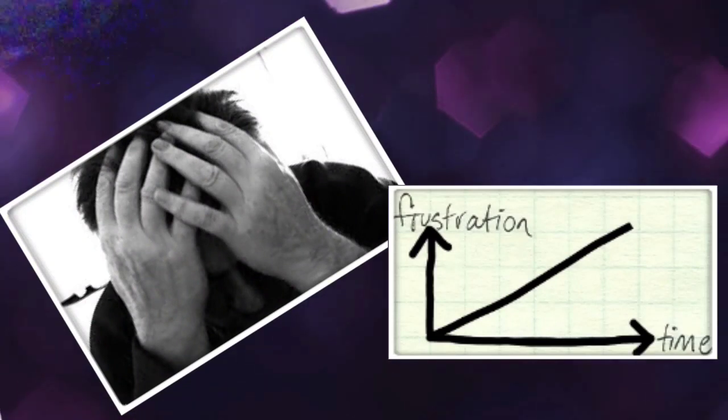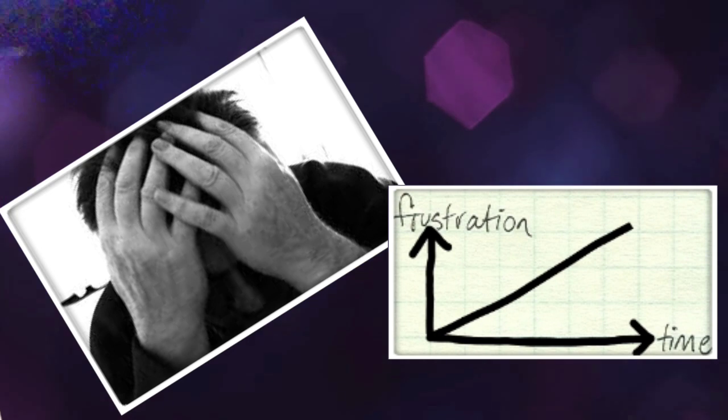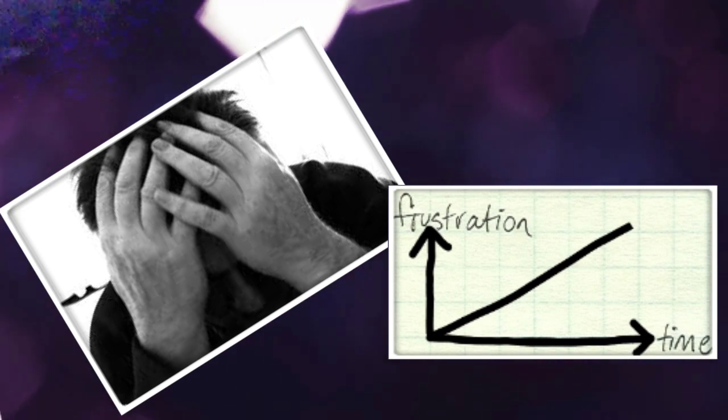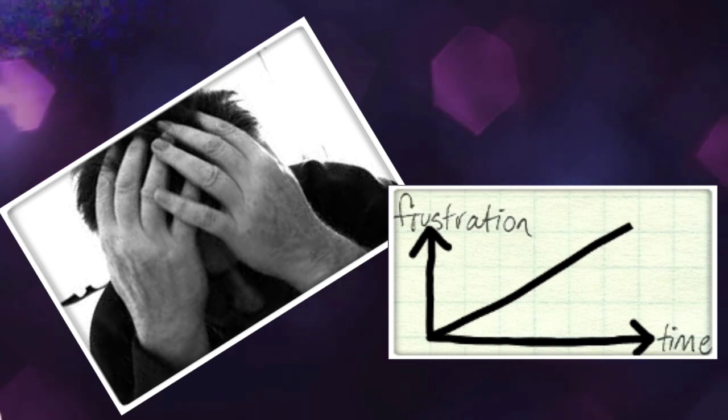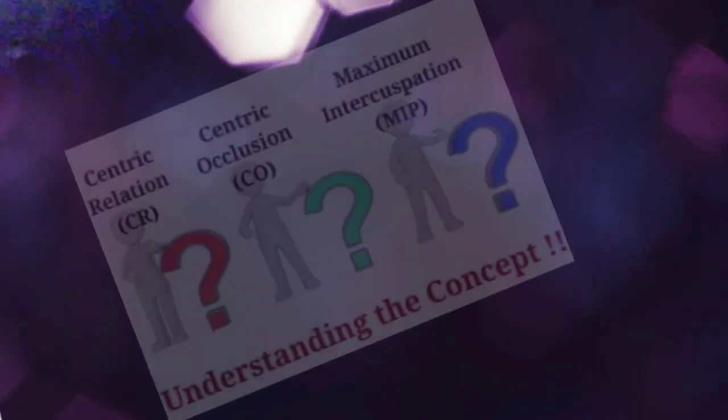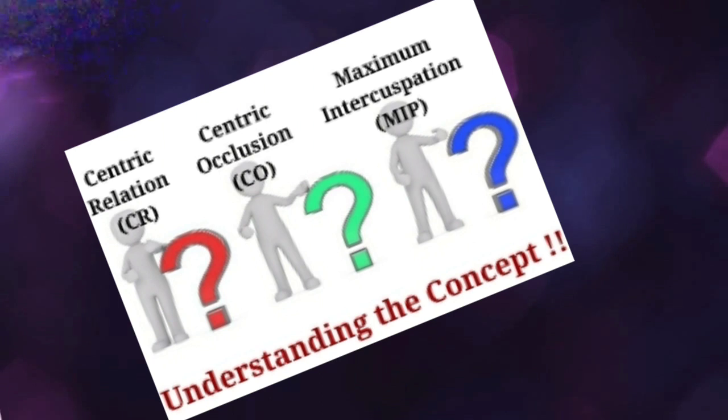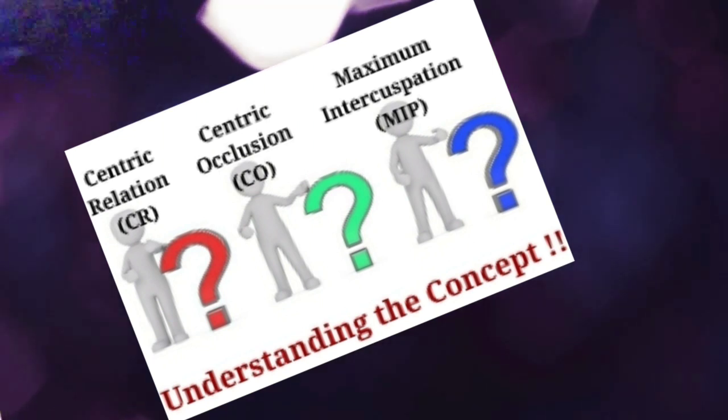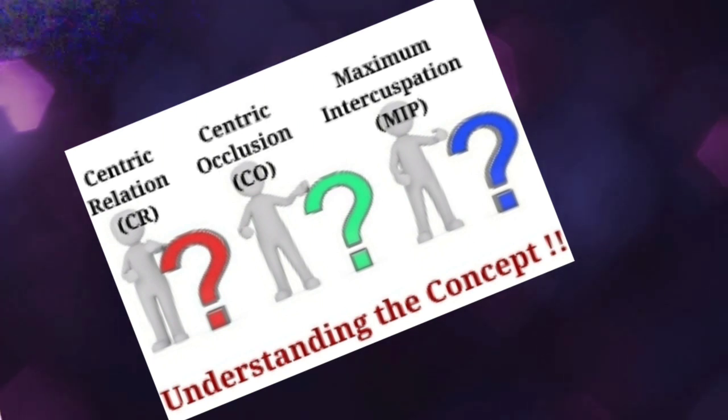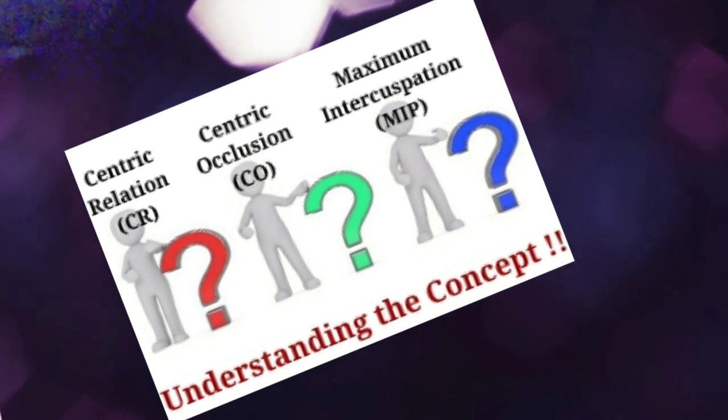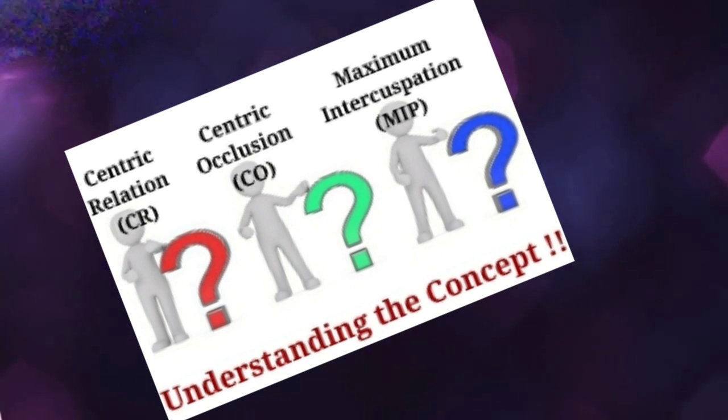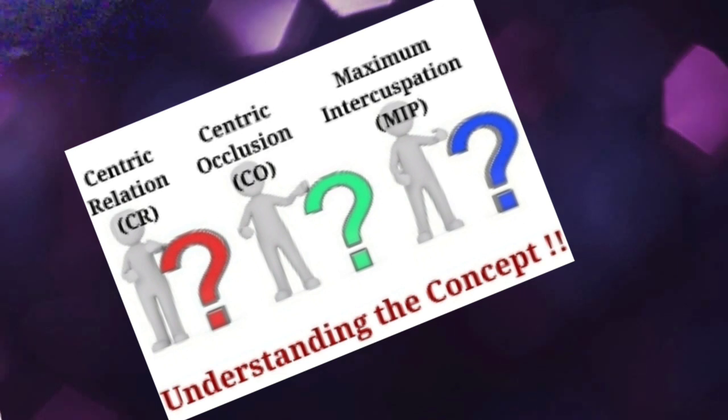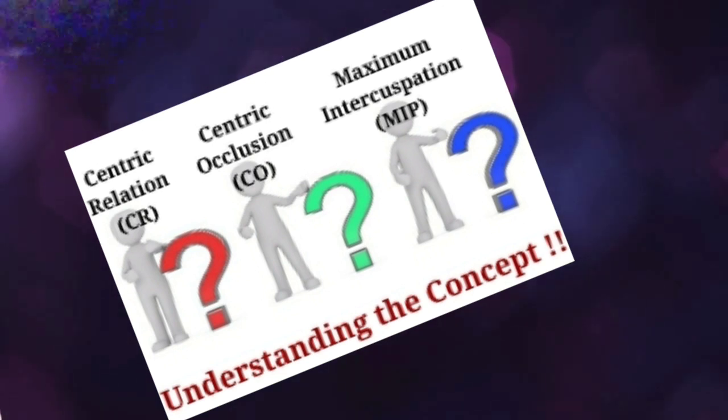How can we expect to construct a strong building if the very foundation is weak? That means if we want to ensure the longevity of a dental restoration, we need to have a clear understanding about certain concepts like centric relation and occlusion, maximum intercuspation, vertical dimension, anterior guidance, neutral zone, or plane of occlusion. The list is so long, but in this video I'll talk about centric relation, centric occlusion, and maximum intercuspation.